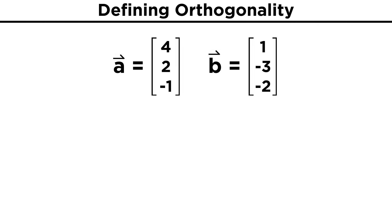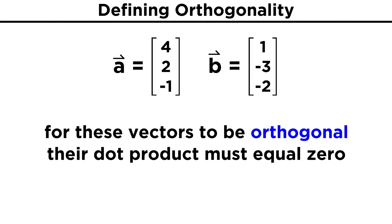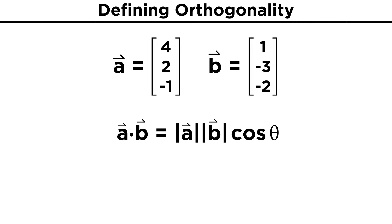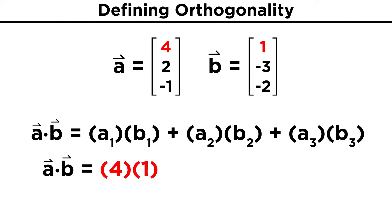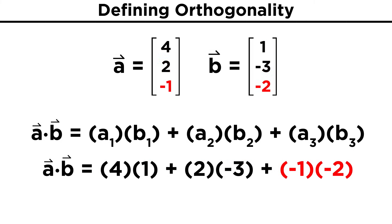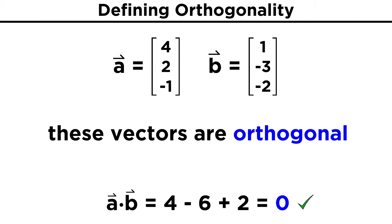Let's now consider the vectors a = (4, 2, -1) and b = (1, -3, -2). To see if these vectors are orthogonal, we must check that the dot product is zero. Apart from the geometric definition, we can use the algebraic one: the product of the first components plus the product of the second components plus the product of the third components. In this case, a · b = (4)(1) + (2)(-3) + (-1)(-2) = 4 - 6 + 2 = 0. Since the dot product is equal to zero, our vectors are indeed orthogonal.